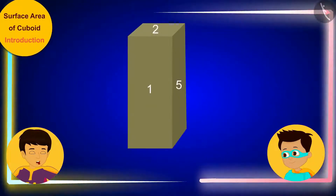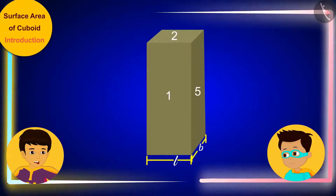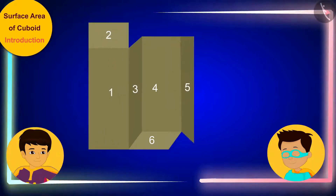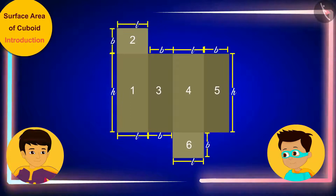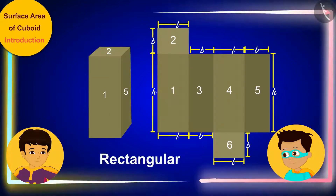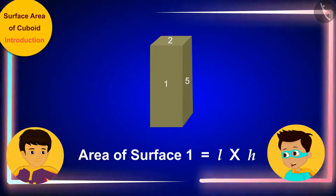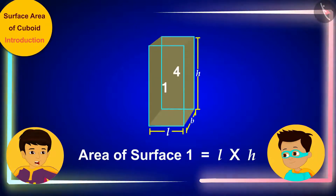Thomas, can you tell me what is the shape of this box? This box is a cuboid. That's right! Suppose the length of this box is L, width B and height H. If we cut and flatten this cuboid box, its net will be formed and it will look something like this. Let's first find out how much paper we will need to cover surface 1. The size of paper required to cover any surface will be equal to its area. The surface is rectangular with length L and width H. This means that its area will be L times H. Surface 1 and surface 4 of the cuboid are congruent.